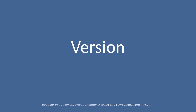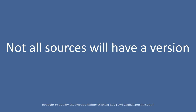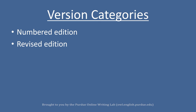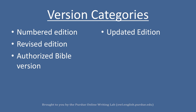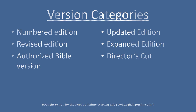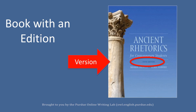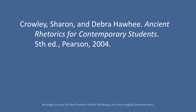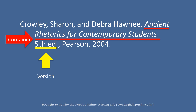Version. Not all sources will have a version, but if they do, it could fall under one of the following categories: a numbered edition, a revised edition, an authorized Bible version, an updated edition, an expanded edition, or a director's cut. Most journal citations will not contain a version. Notice in this example that there are no other contributors, so that portion of the citation is skipped. The container is in italics with standardized capitalization followed by a period, and the edition follows the container — written as 'Fifth Ed.' followed by a comma.